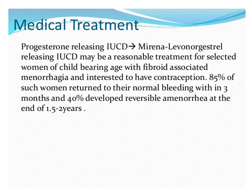Progesterone-releasing intrauterine contraceptive devices like Mirena, containing levonorgestrel, are a reasonable treatment for selected women of childbearing age with fibroid-associated menorrhagia. This results in atrophy of the endometrium and the patient becomes asymptomatic. The fibroid does not reduce in size, but the endometrium becomes atrophic and the patient is symptom-free.